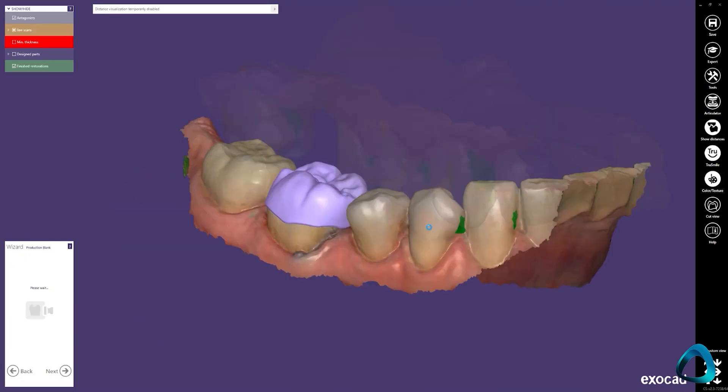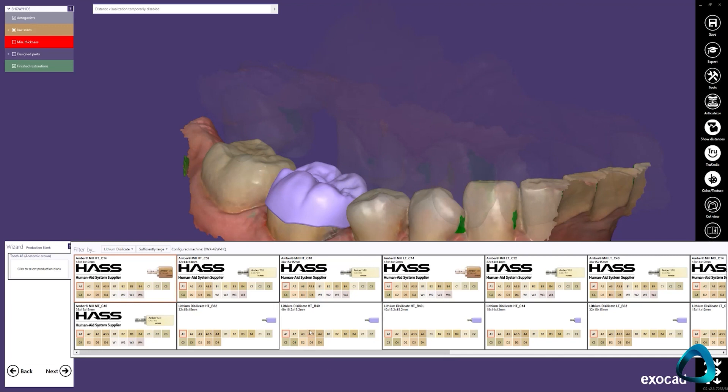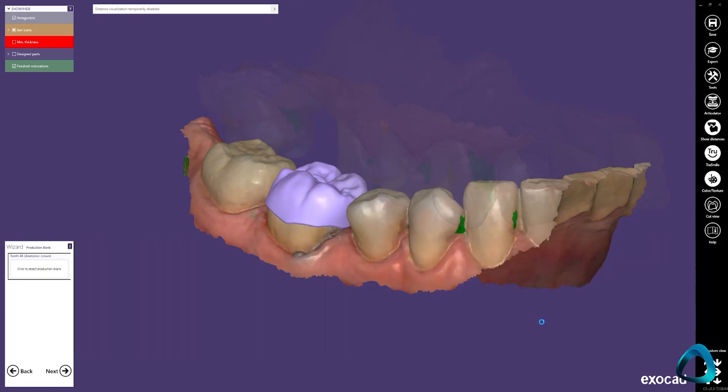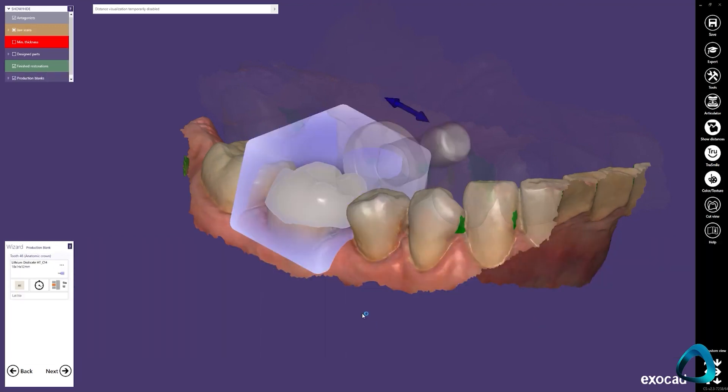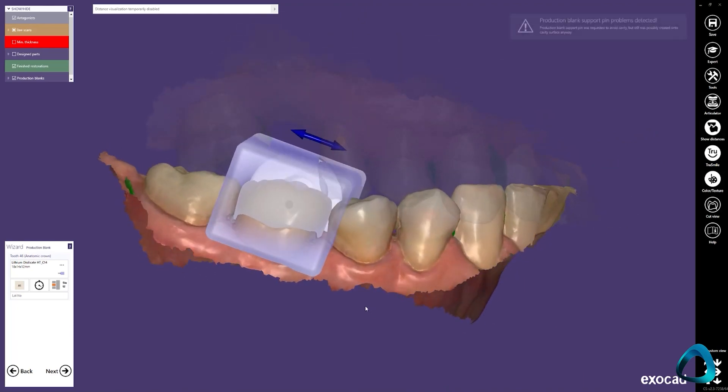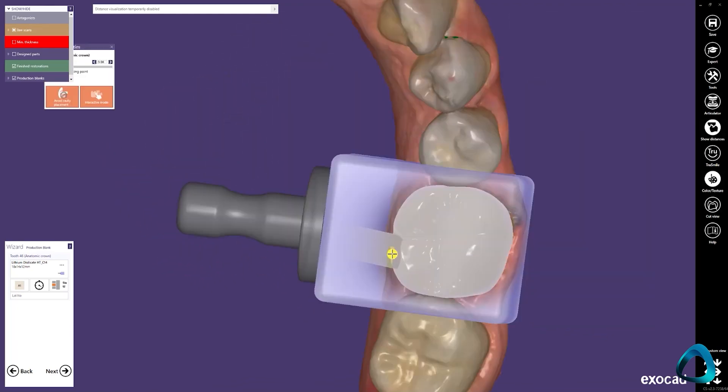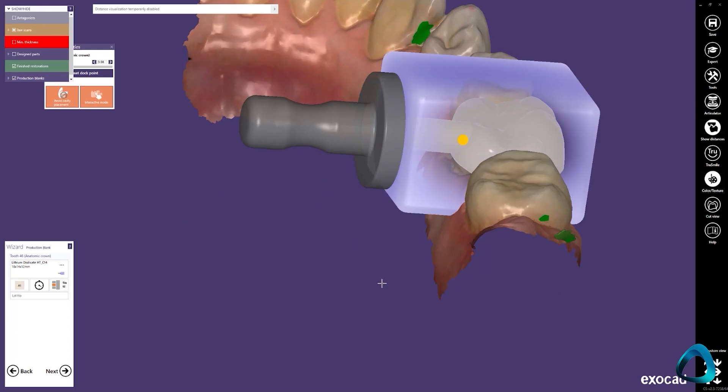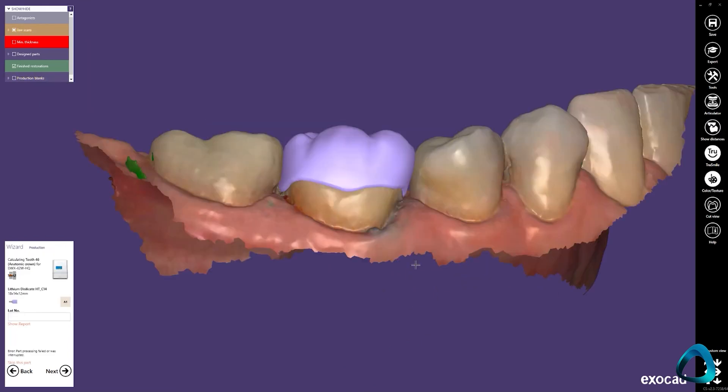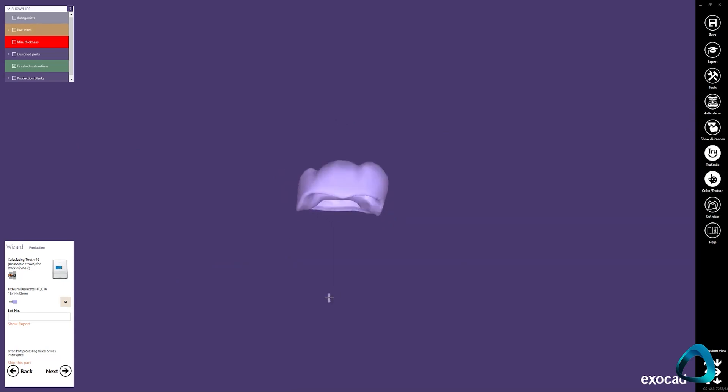The final part of the workflow is fabricating the crown. Proceed by choosing the right block or blank of material for your restoration and nest the restoration within this material. You can adjust the sprue so it avoids any critical areas such as contact points or margins. Finally, you are ready to mill. Send the restoration to your CAM software and begin the process.